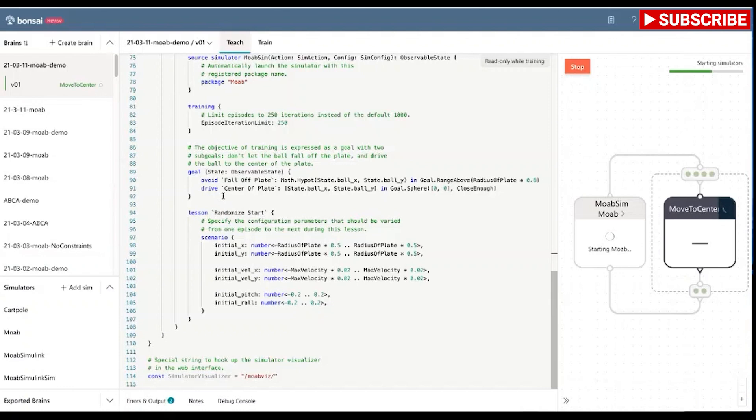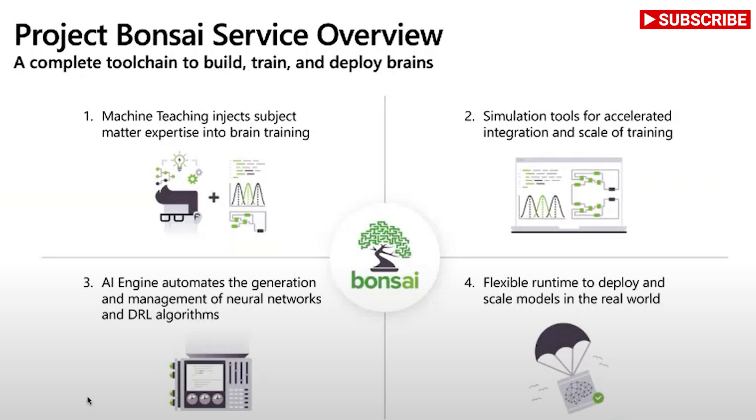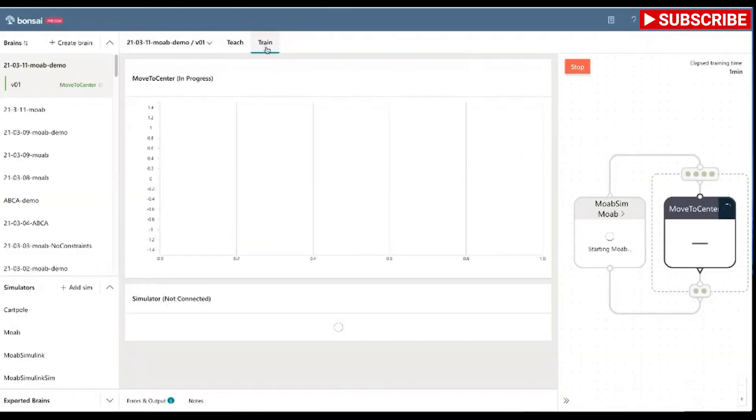What this really enables you to do is basically if you're a domain expert, you can teach a machine the same way you would teach a new colleague without having to know anything about AI. You don't need to be an AI or a deep reinforcement learning expert to teach an AI agent. And then finally the fourth component is the ability to deploy that brain in the real world.